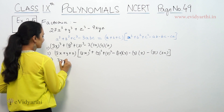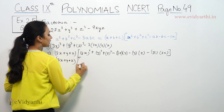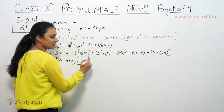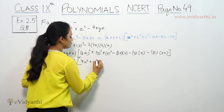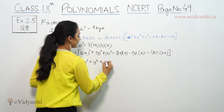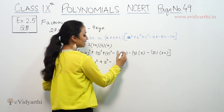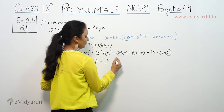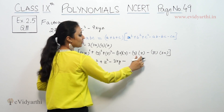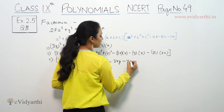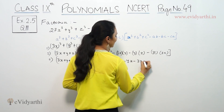So the answer is 3x plus y plus z, times 9x squared plus y squared plus z squared minus 3xy minus yz minus 3xz. You multiply 3x by y and z, then y by z, and z by 3x to get the cross terms.